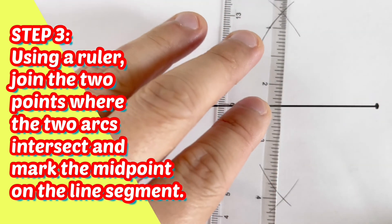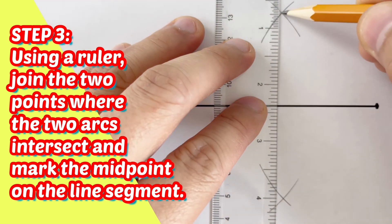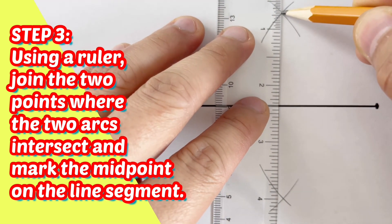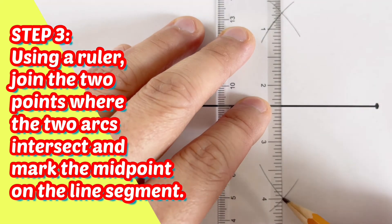So these are the two intersections. There's one up above the line segment, and there's another one below the line segment.